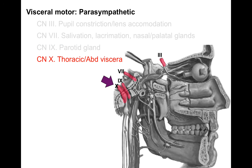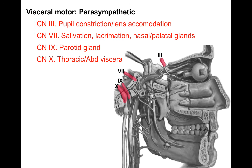Cranial nerve number 10 supplies all the thoracic and abdominal viscera. In the thoracic cavity, it slows your heart down, reduces cardiac output, and causes bronchoconstriction. In the abdomen, it drives peristalsis of the foregut and midgut and serves organs like the liver, pancreas, and gallbladder. That covers parasympathetic innervation.